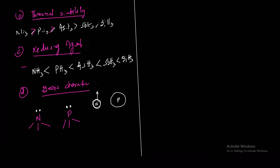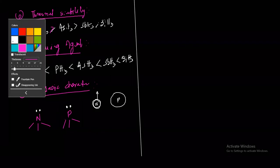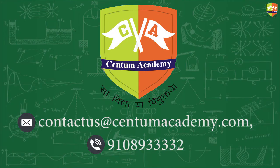These are the four important characteristics of the hydrides of Group 15 elements. These elements also react with oxygen and form oxides.